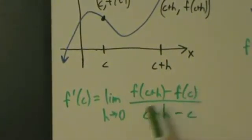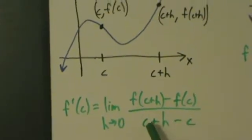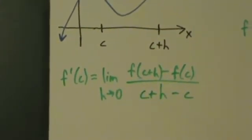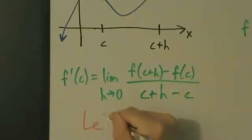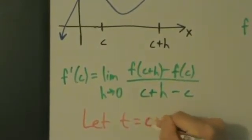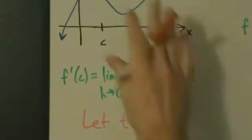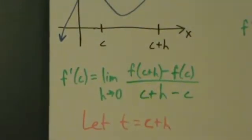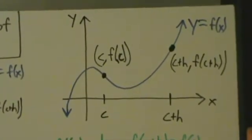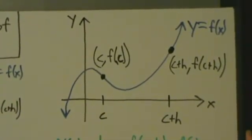Remember that this h in the denominator was simplified from c plus h minus c, because it's a change in y divided by the change in x — the change in x is from c plus h to c, so c plus h minus c. Instead of using this definition, let's go ahead and make a substitution. So let t equal c plus h. We're going to use this substitution to change things around, coming over to an exact copy of this graph, leaving the original as it is.